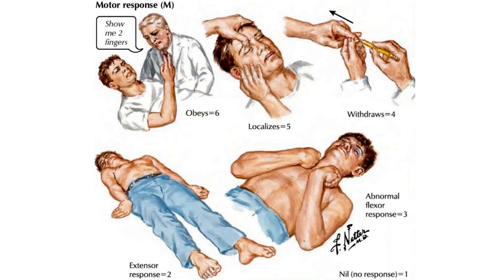Now let's learn the assessment of motor response. We ask the patient to show a motor response — for example, 'Hello Mr. X, show me your 2 fingers.' If the patient obeys the command and shows 2 fingers, 6 points are given. If the patient localizes a motor response, 5 points are given. If the patient withdraws on external stimuli, 4 points are given. If abnormal flexion response is seen, 3 points are given. If only extensor response is present, 2 points are given. And 1 point is given on no response.